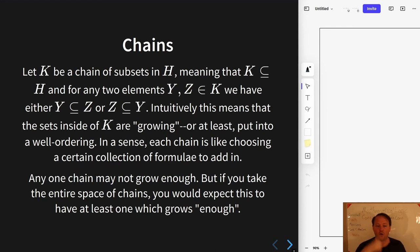But if you take the space of all of the chains, then effectively what we want to do is have a way of picking one of them that is maximal. And effectively, that's what Zorn's Lemma tells us must exist under a certain condition, which we'll see right now.